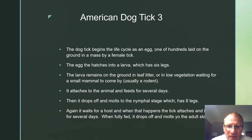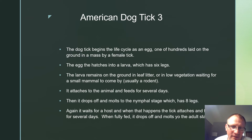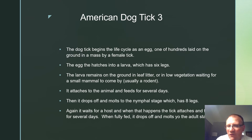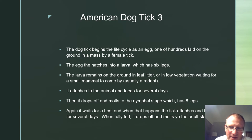The dog tick begins its life cycle as an egg, one of hundreds laid on the ground in a mass by a female tick. The egg hatches into a larva which has six legs. The larva remains on the ground in leaf litter or low vegetation, waiting for a small mammal to come by — usually a rodent. It then attaches to the animal and feeds for several days.